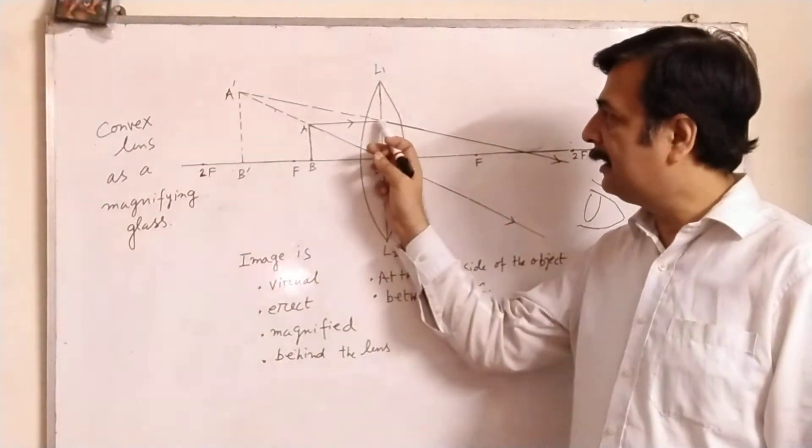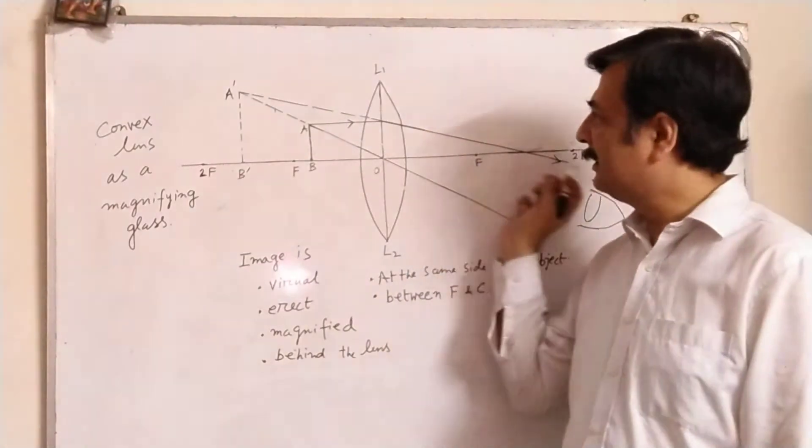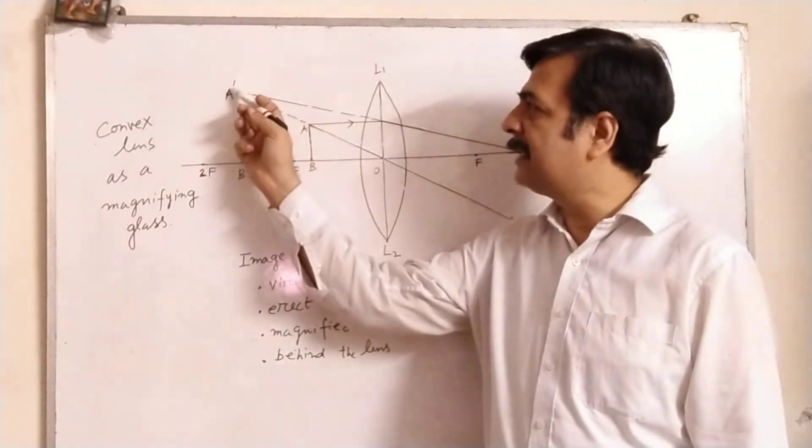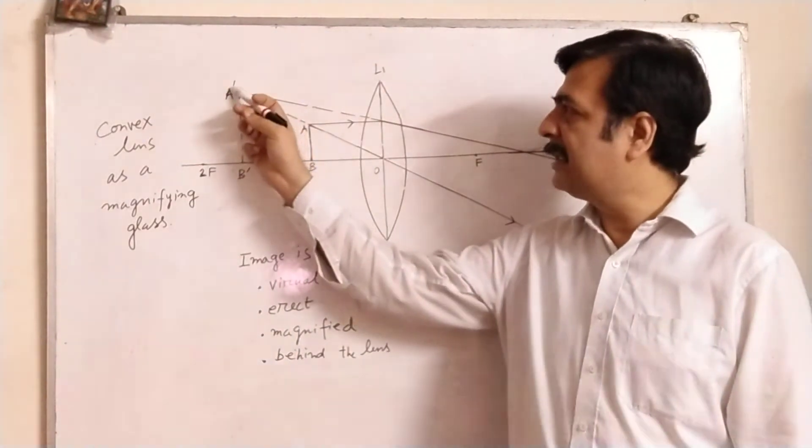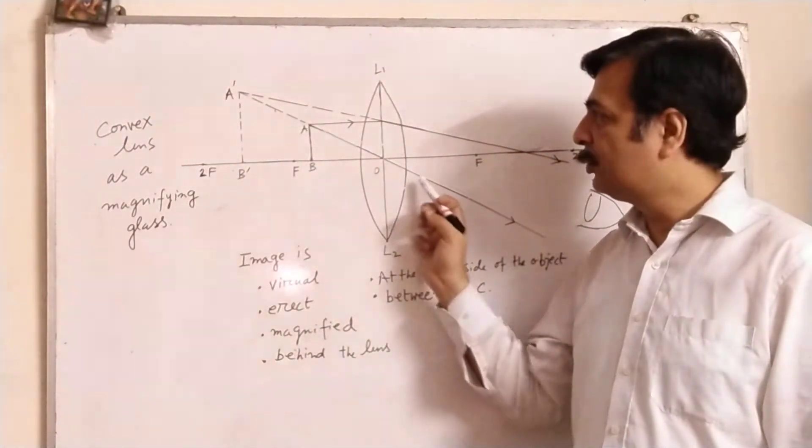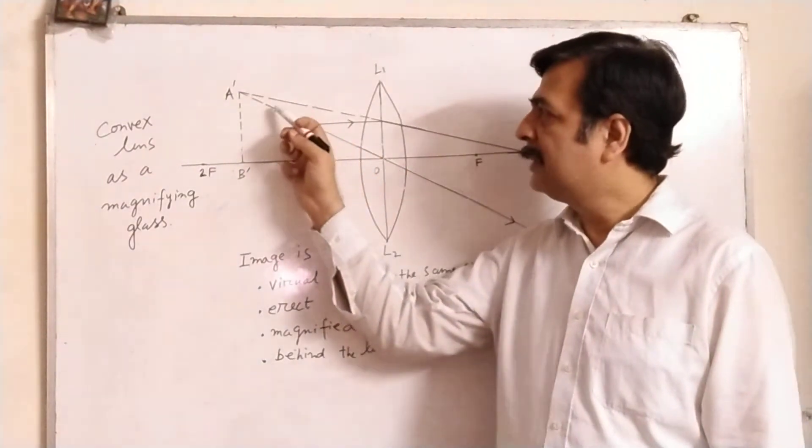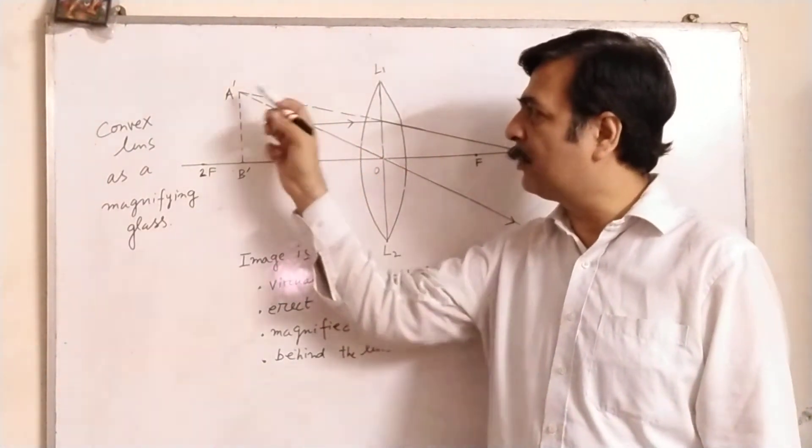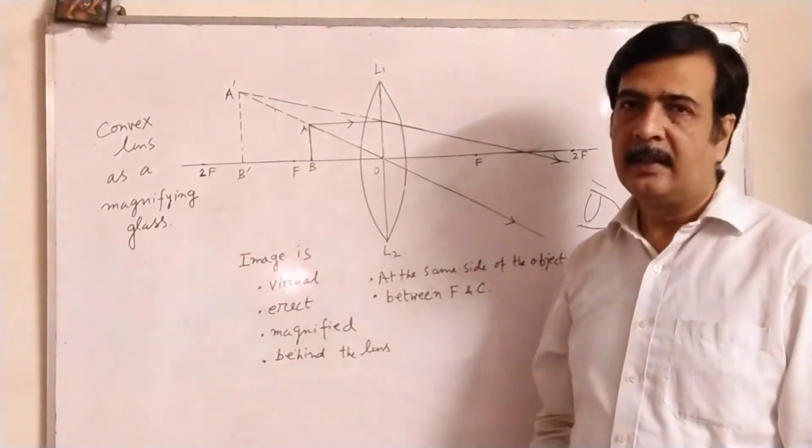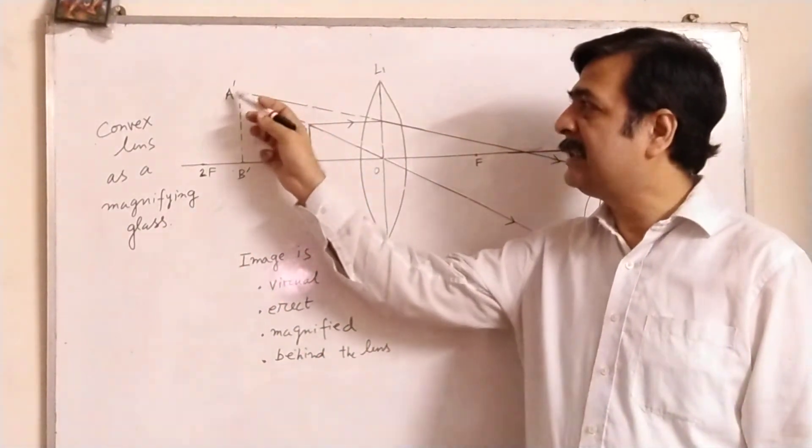Now if we extend this way in the backward direction, it is meeting at A dash. It is reaching at A dash. Also the ray which is passing through the optical center, that is also extending in the backward direction. These two extended rays in the backward direction meet at A dash.